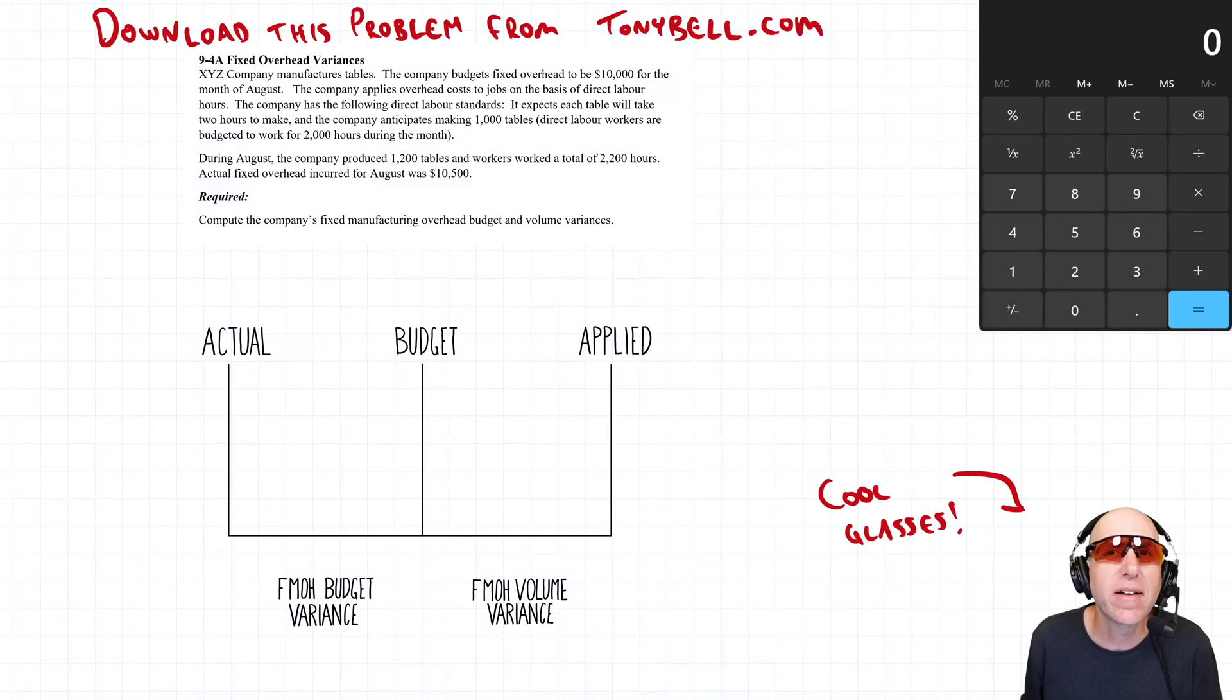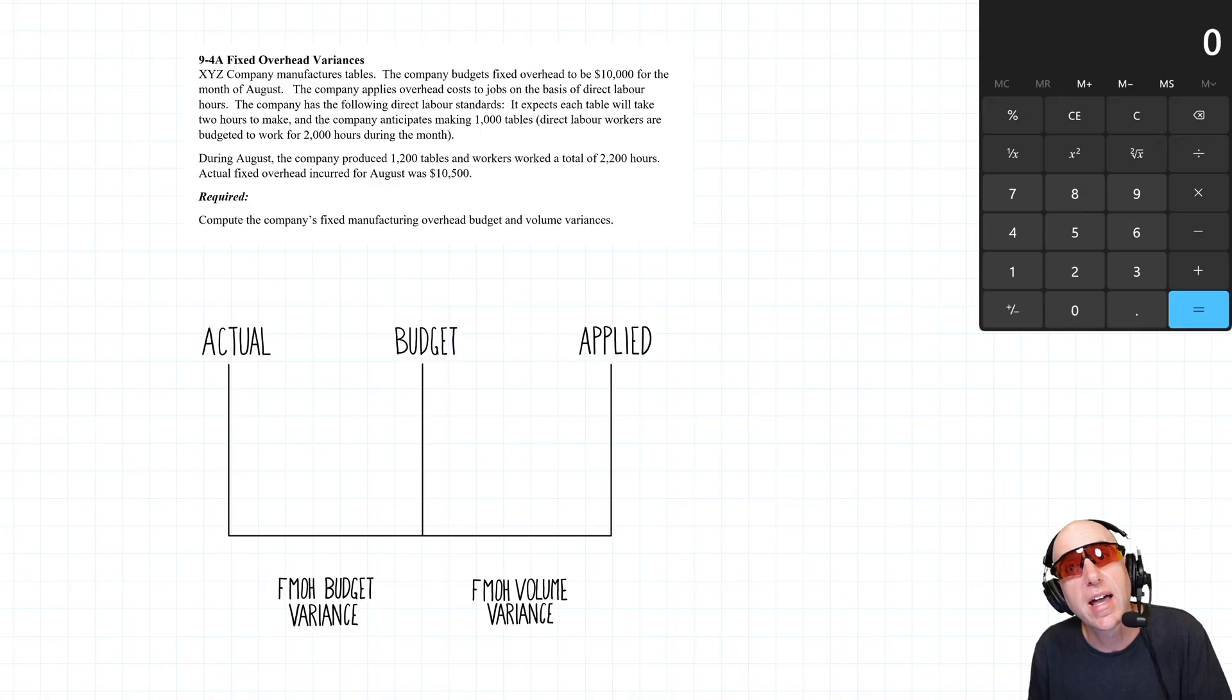Let's take a run through problem 9-4A on fixed overhead variances. Fixed overhead variances are not any harder than the material, labor, or variable overhead variances we've already learned. They're just different, and because they're different, my students tend to struggle on this one, well just one piece of this one, and we'll get to that in a minute.